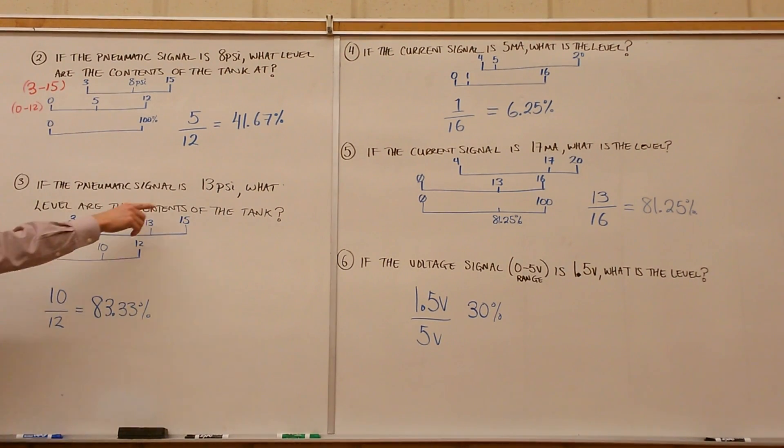Next one: if we've got 13 psi out of 15, you can't take 13 divided by 15 again because it's not referencing 0. We're going to go from the 3 to 15 range and drop that whole range down to 0 to 12. That way, once it's referencing 0, we can take the percentage. Again, 3 comes off everything.